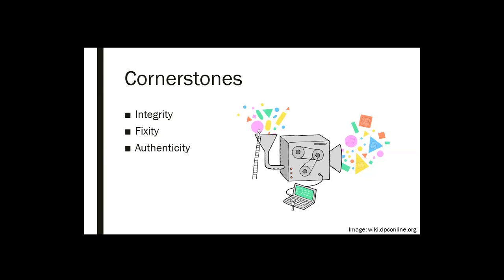The other cornerstone is authenticity — making sure that a record actually is what it appears to be. Sometimes that involves having some provenance, information that proves the file truly is what it seems. Sustainability is another cornerstone. Files need to be sustainable — this goes back to file format, software, and hardware obsolescence. Sustainability can also mean having a preservation system that's going to be maintained by a department or institution for a long period of time, from file level all the way up to the administrative level.